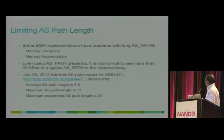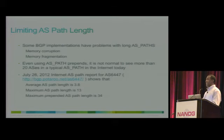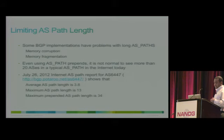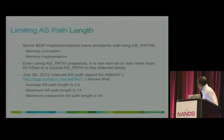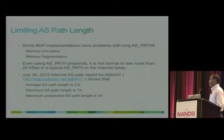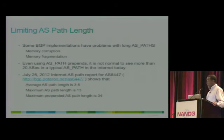Some implementations of BGP do not support AS path lengths beyond a certain number. It's important that you do not exceed the AS path length beyond a certain number — normally more than 20 is really too much. You can use BGP tools to see the maximum length on the internet. If you do prepend, don't prepend too much because those routers may drop your advertisements. Routers that do not support AS path lengths beyond a certain number may drop your routes.